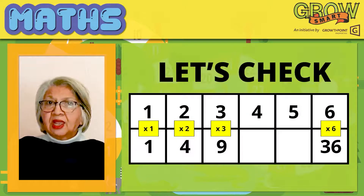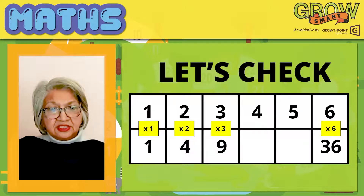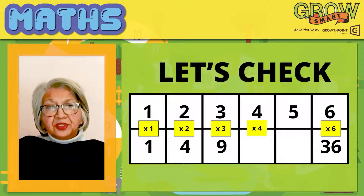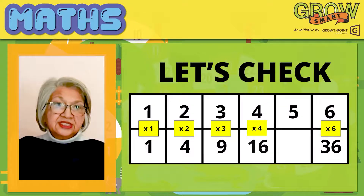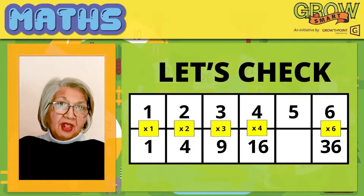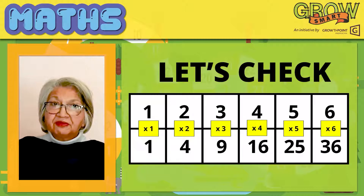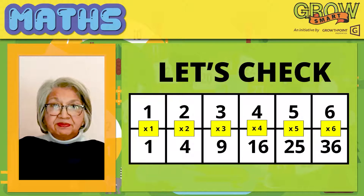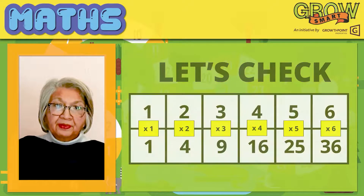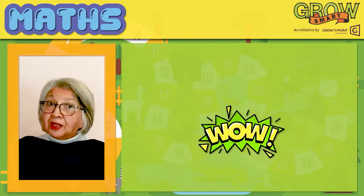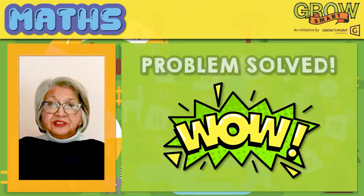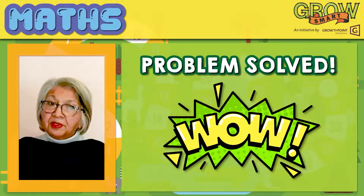Let's check our answers. 4 multiplied by 4 is equal to 16. 5 multiplied by 5 is equal to 25. And 6 multiplied by 6 is equal to 36. And wow, we have solved the problem.